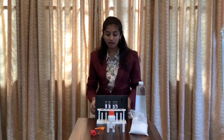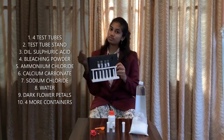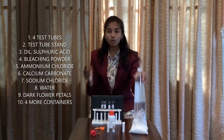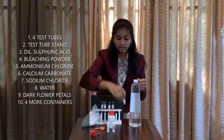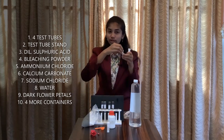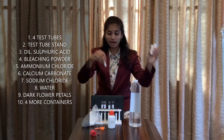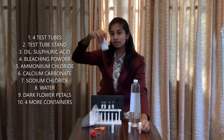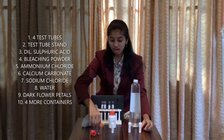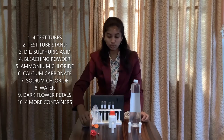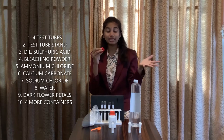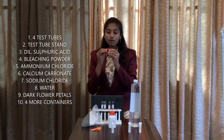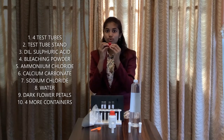The materials required for today's activity are 4 test tubes in a test tube stand, water, bleaching powder, calcium carbonate, sodium chloride, ammonium chloride, dilute sulphuric acid, a spoon to scoop out the chemicals with, and finally a flower whose petals are dark in colour. For mine, I have chosen rose petals.